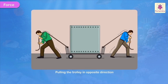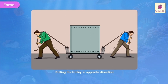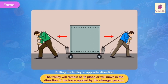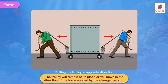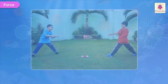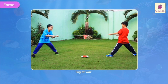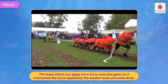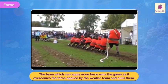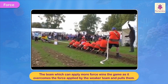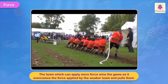On the other hand, if both the men pull the trolley in the opposite direction, the trolley will remain at its place or will move in the direction of the force applied by the stronger person. The game of tug of war is based on this principle. The team which can apply more force wins the game as it overcomes the force applied by the weaker team and finally pulls it towards them.